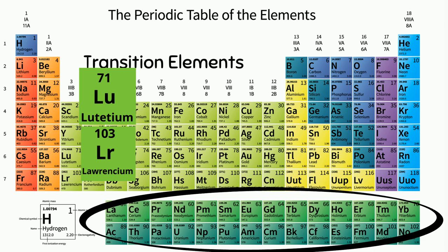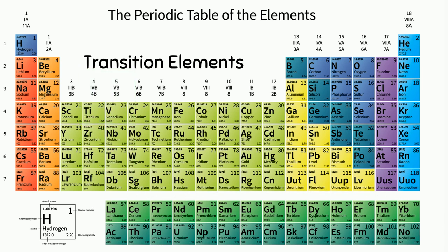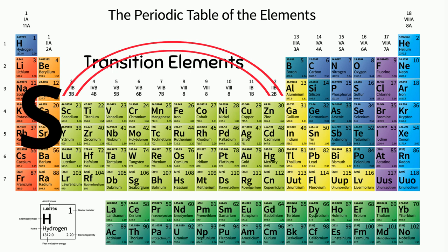The transition metals are metallic elements that serve as a bridge or transition between the two sides of the table. The elements with the S orbitals and P orbitals are separated by the transition metals. The lanthanides and actinides at the bottom of the table are sometimes known as the inner transition metals.